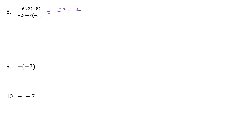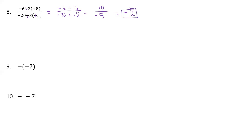It looks similar. We have a negative 20, and then we have a negative 3 times a negative 5. That negative times a negative is positive, so we have a negative 20 plus 15. Now we have 16 minus 6, well that's 10, and 20 minus 15 is 5, but it's negative because our larger one was negative. So 10 divided by negative 5 is negative 2.